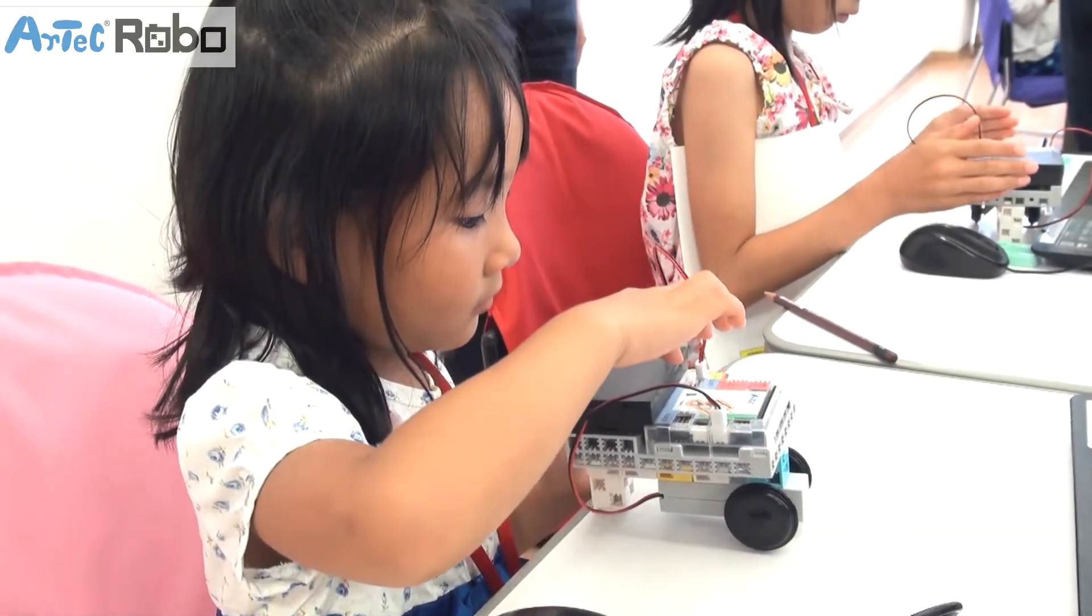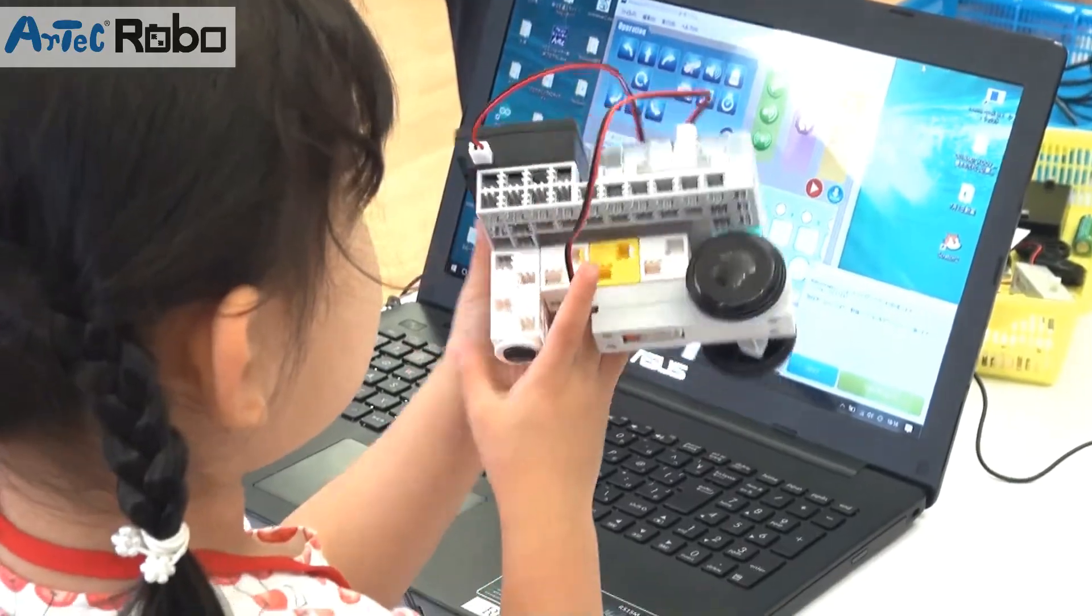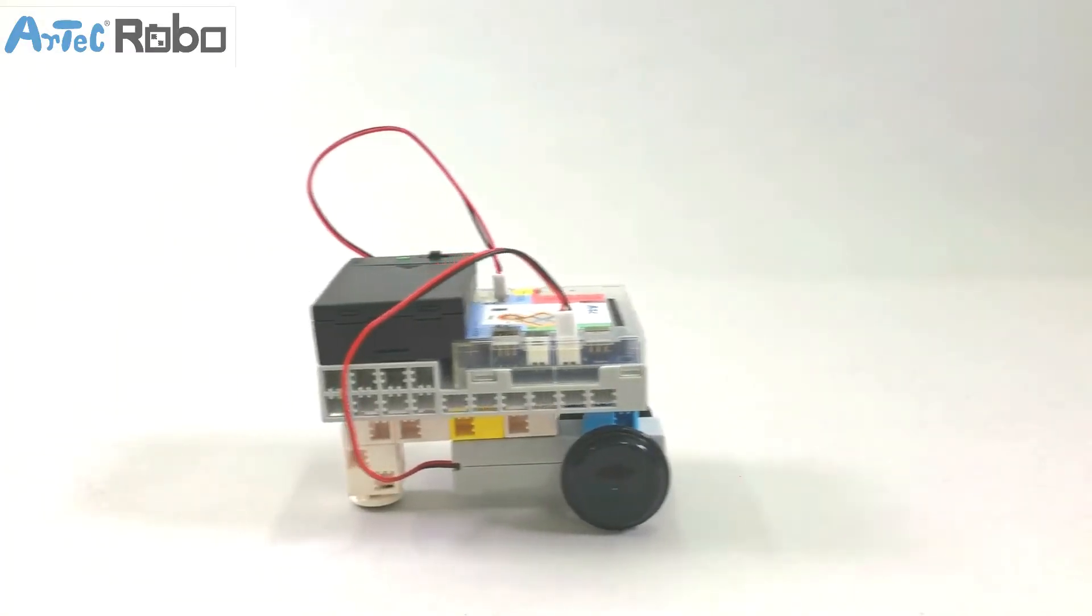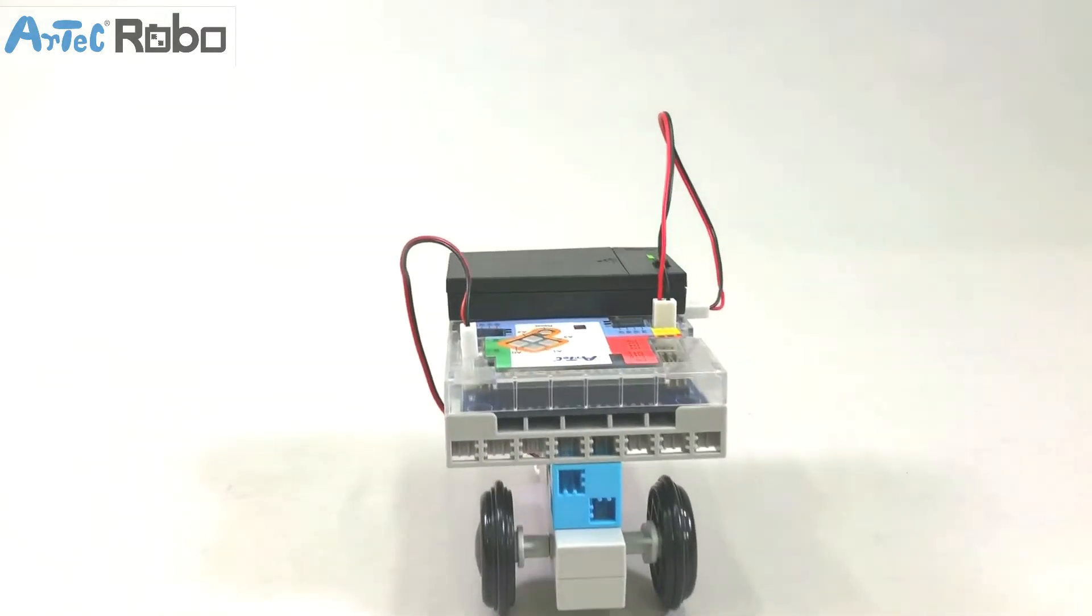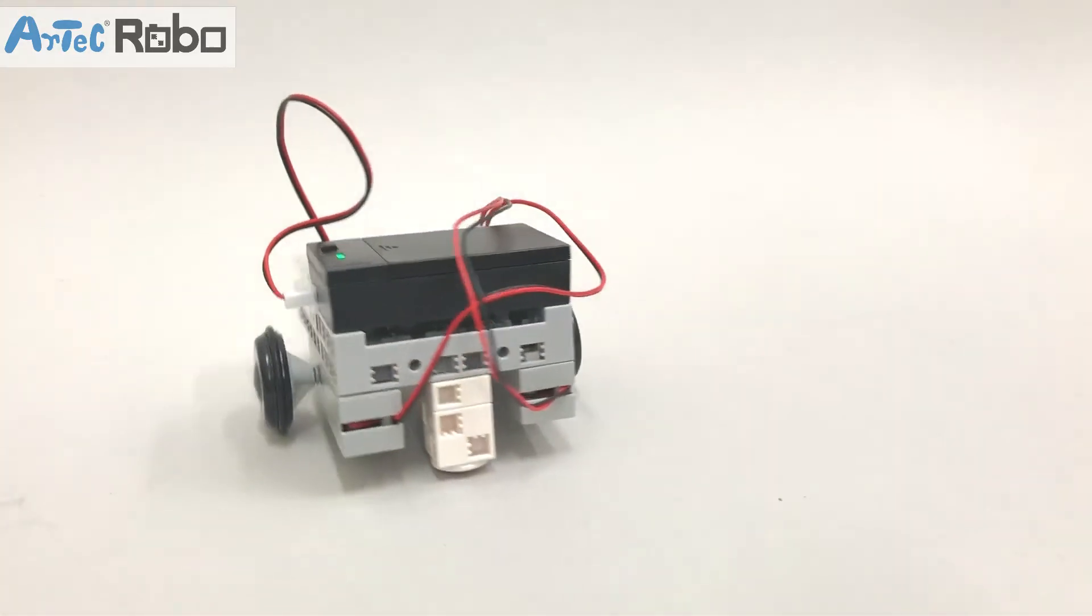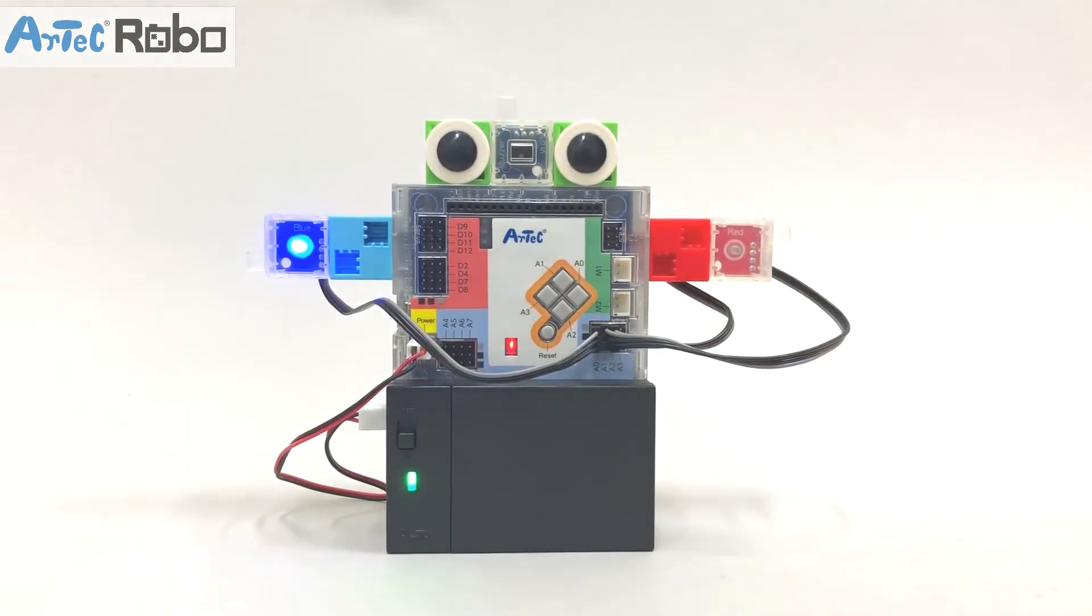Learn programming while having fun. The lessons cover the basics of programming and use the icon programming environment. Build different robots using motors, LEDs, buzzers, IR photo reflectors, and more as you learn how to make the robot behave how you want by writing a program by yourself.